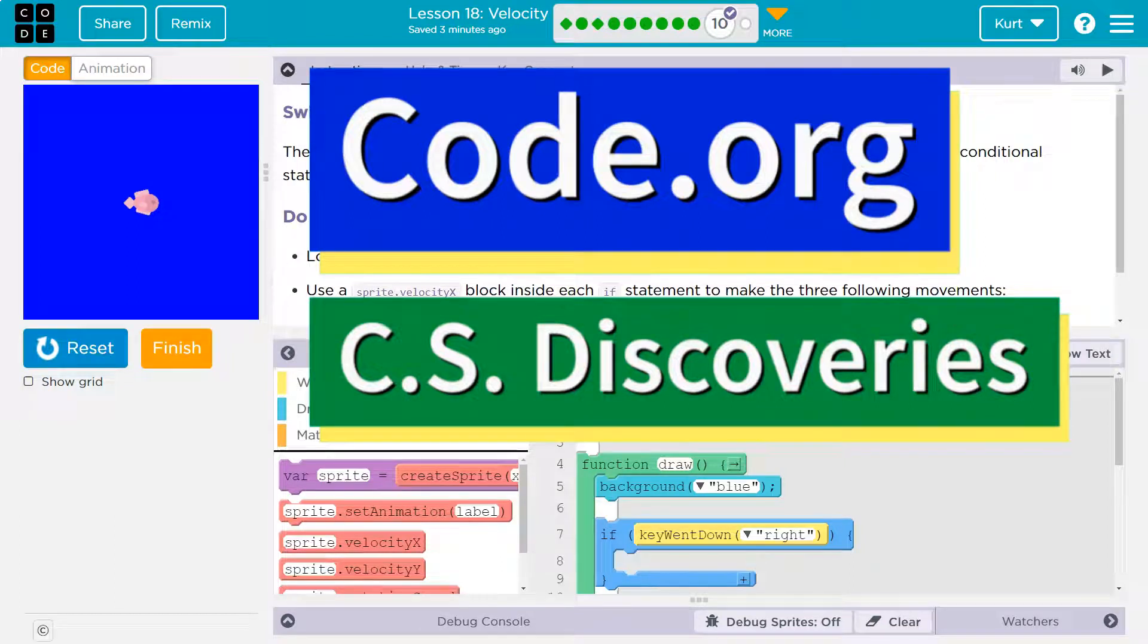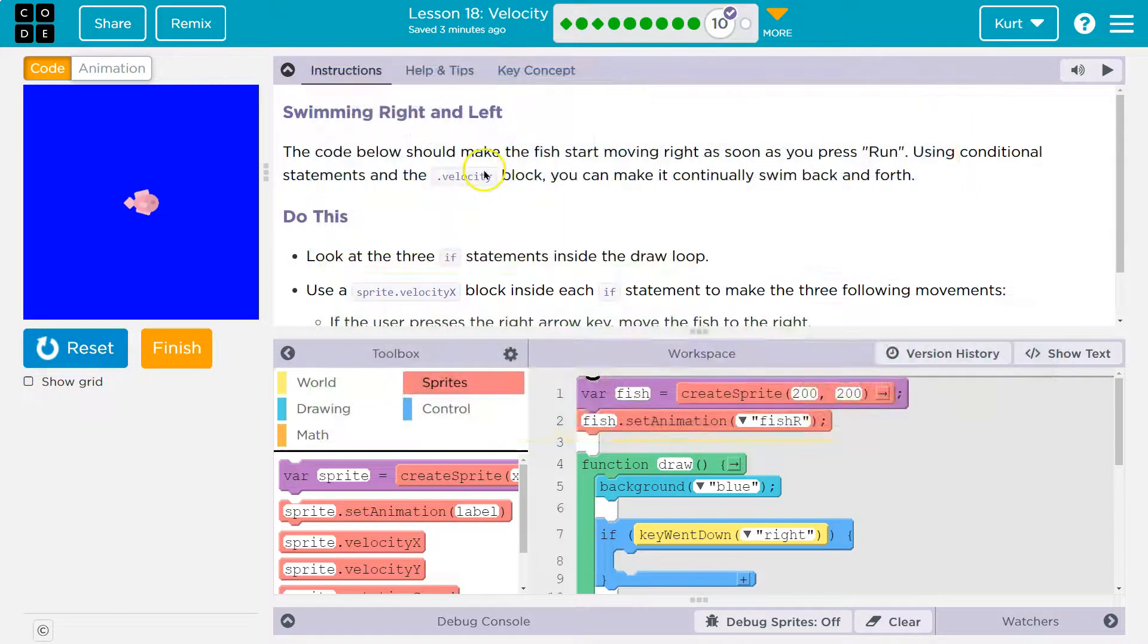This is code.org. Let's see what we're working on. Swimming right and left. The code below should make the fish start moving right as soon as you press run. Using conditional statements and the velocity block, you can make it continually swim back and forth.